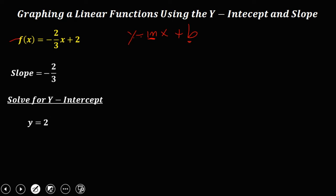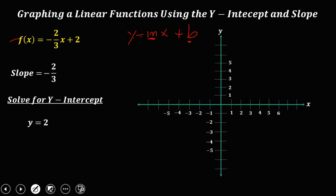To graph this function, we need to plot first the y-intercept — that's y equals 2. Then using the slope, that's the rise over run. Since the slope is negative, therefore the rise is downward.